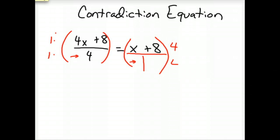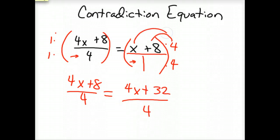But over here, to make a denominator of 4, we need to multiply it by 4. And so on the left side we'd have 4x plus 8 over 4 equals 4x plus 32 over 4, because you need to distribute the 4 on the top through everything.